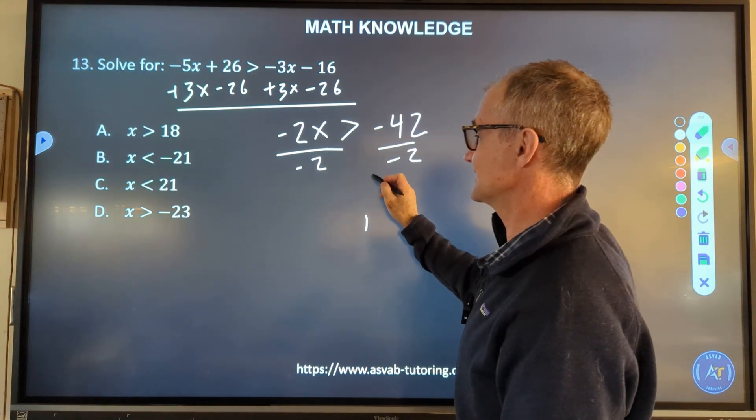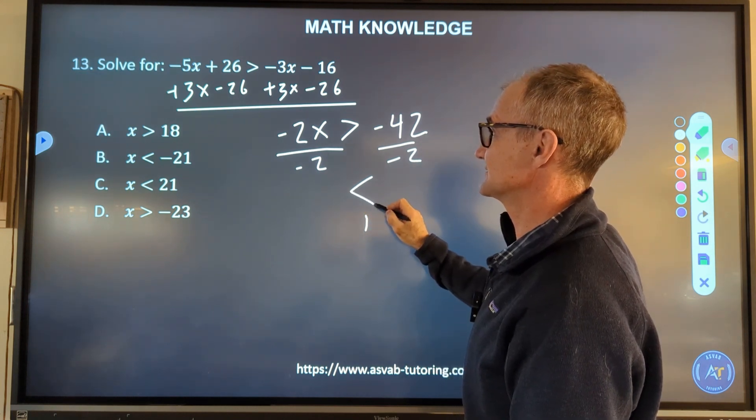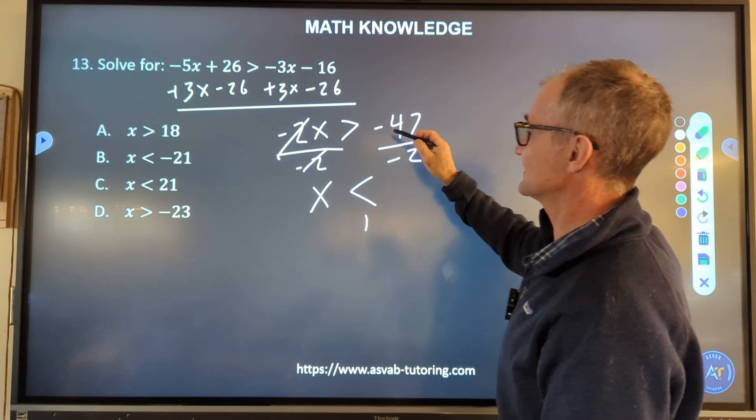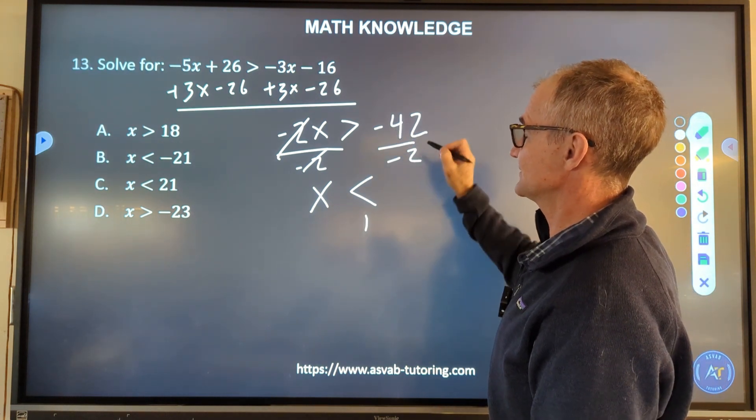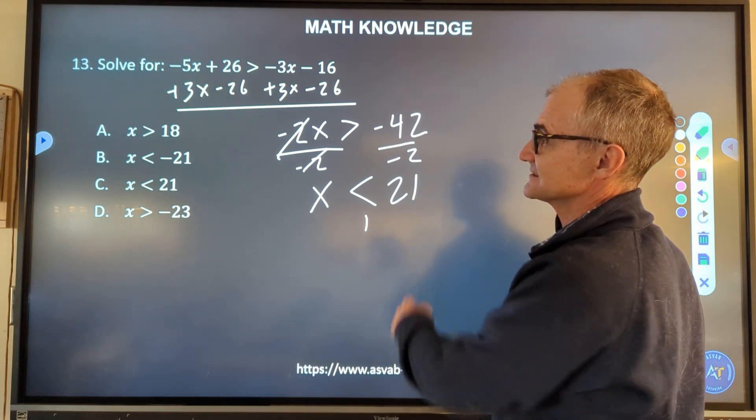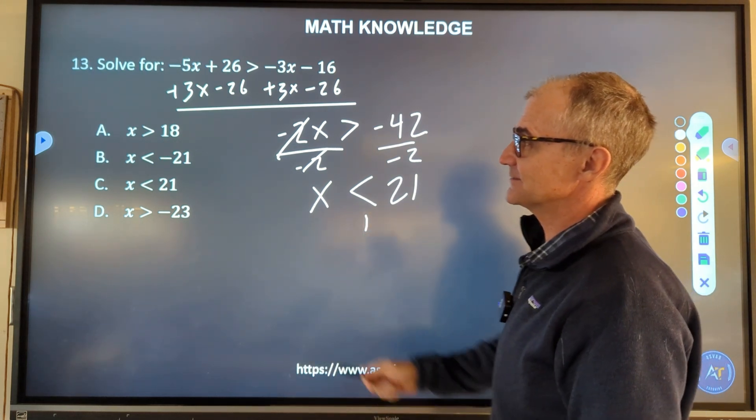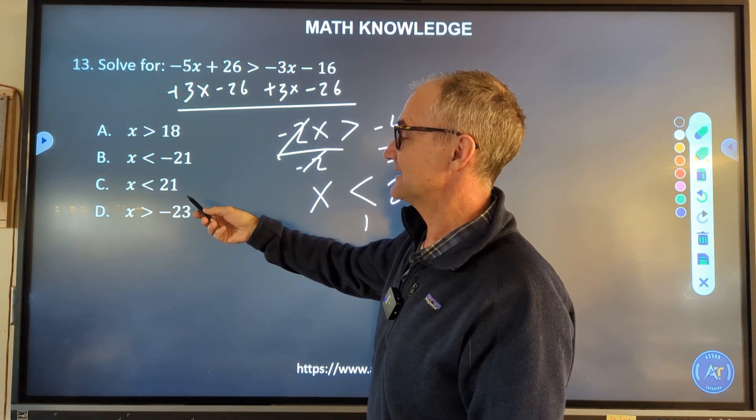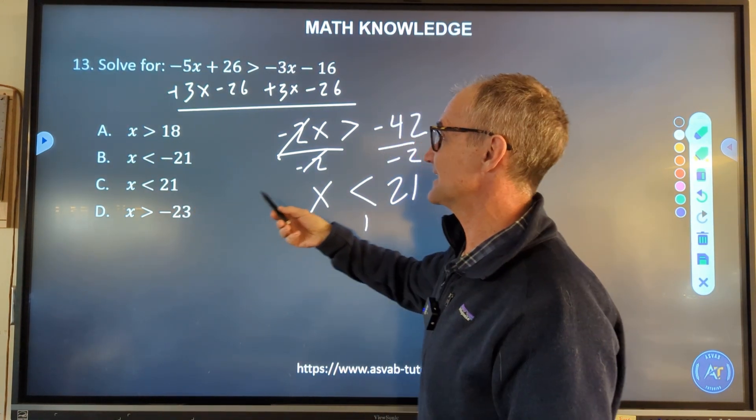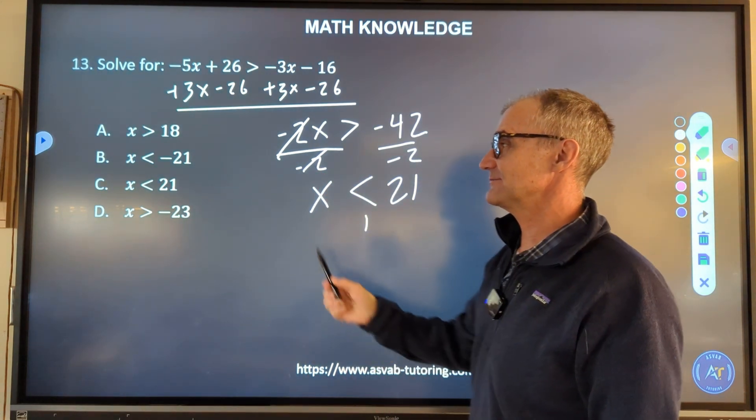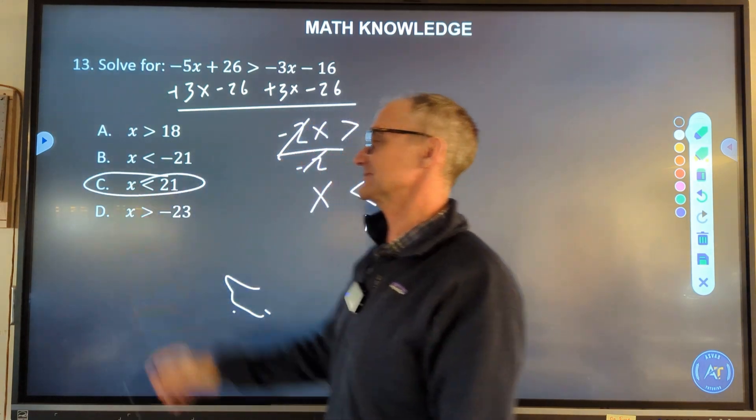Now what I got to do is divide both sides by -2 and that's where that rule is going to come into play. I am dividing by a negative, so that thing right there that's greater than is now less than. -2s cancel, I got x by itself. -42 divided by -2 is 21, so x is less than 21. As I glance down at these answers, there are two answers with 21. The question is, did you know that trick that when you divide by a negative, you flip that sign. So that's kind of the point of the problem. Answer C, your correct answer.